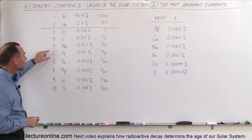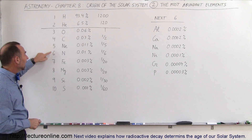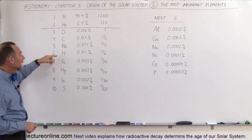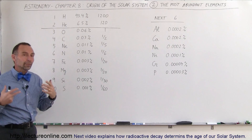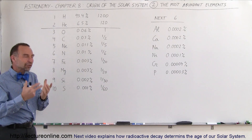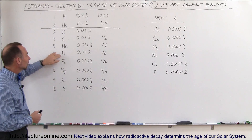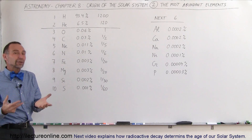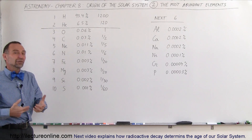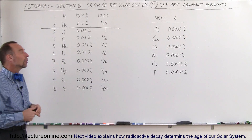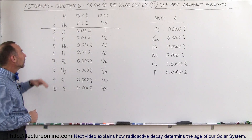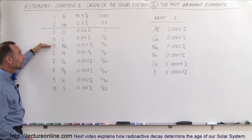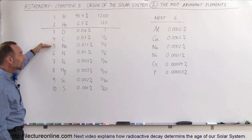Notice that neon and nitrogen are also very abundant. The primary substance in our atmosphere is nitrogen, so that's interesting. Neon is a noble gas that doesn't react with anything, so it would be hard to find neon compounds anywhere, but notice that neon is the fifth most abundant element in the galaxy.